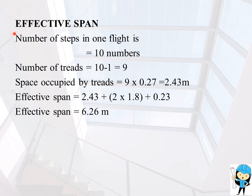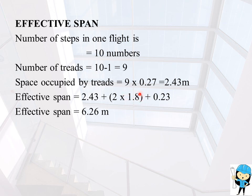The initial step in the design of a staircase is to find the effective span. Number of steps in one flight is taken as 10, so number of threads equals 10 minus 1, which gives 9. Space occupied by threads equals 9 into 270 mm, which is 0.27 m, giving 2.43 m. Therefore effective span equals 2.43 m plus 2 into 1.8 m (waist slab dimension) plus 0.23 m (wall thickness), giving an effective span of 6.26 m.